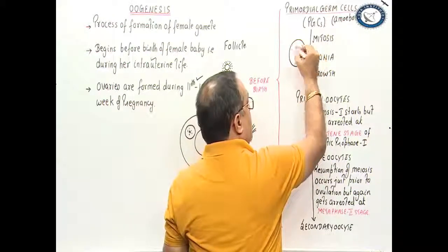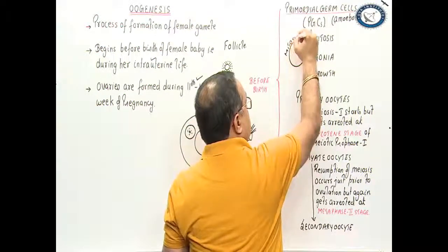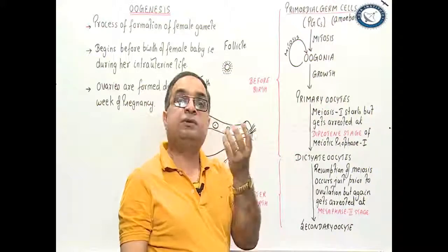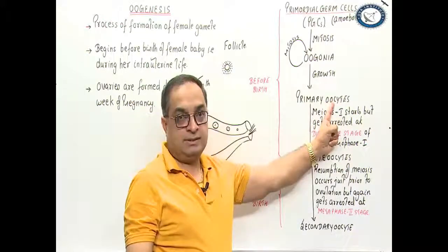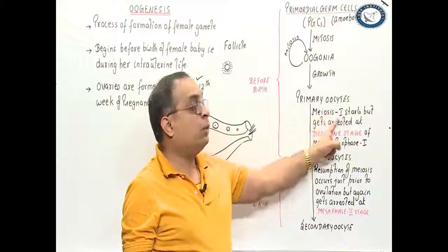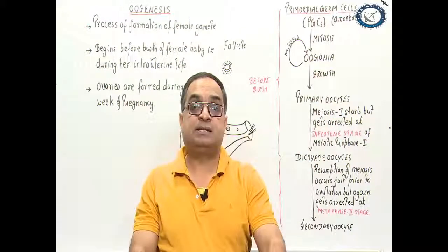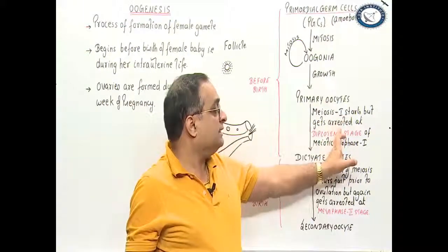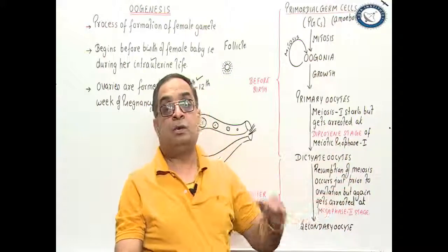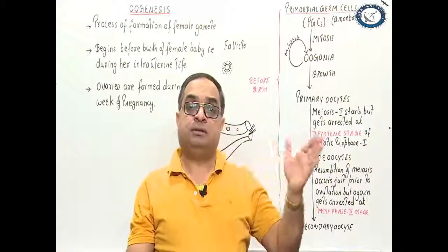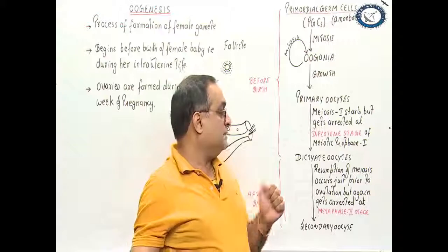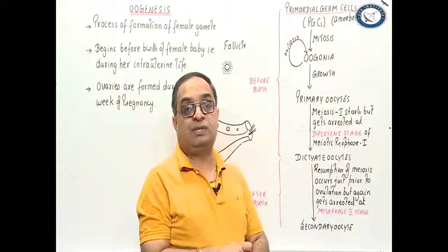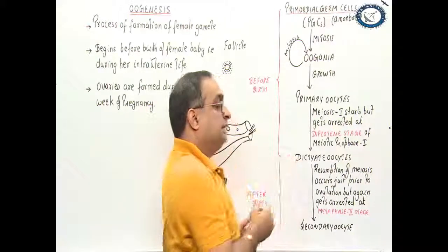Oogonia undergo a growth phase — their size increases — and we call them primary oocytes. In primary oocytes, meiosis 1 starts, but gets arrested at the diplotene stage of prophase 1. You know that meiosis has further stages: meiosis 1 and meiosis 2, with sub-stages like leptotene, pachytene, diplotene, and diakinesis. Meiosis starts but gets arrested at the diplotene stage. All oocytes in which meiosis is arrested are called dictyate oocytes.